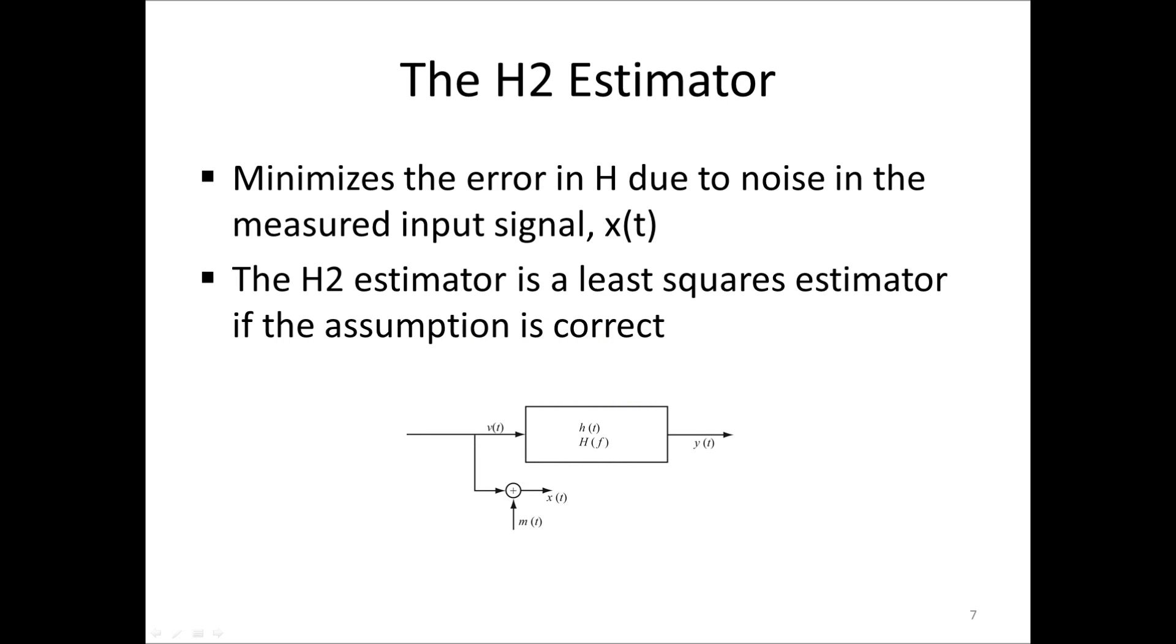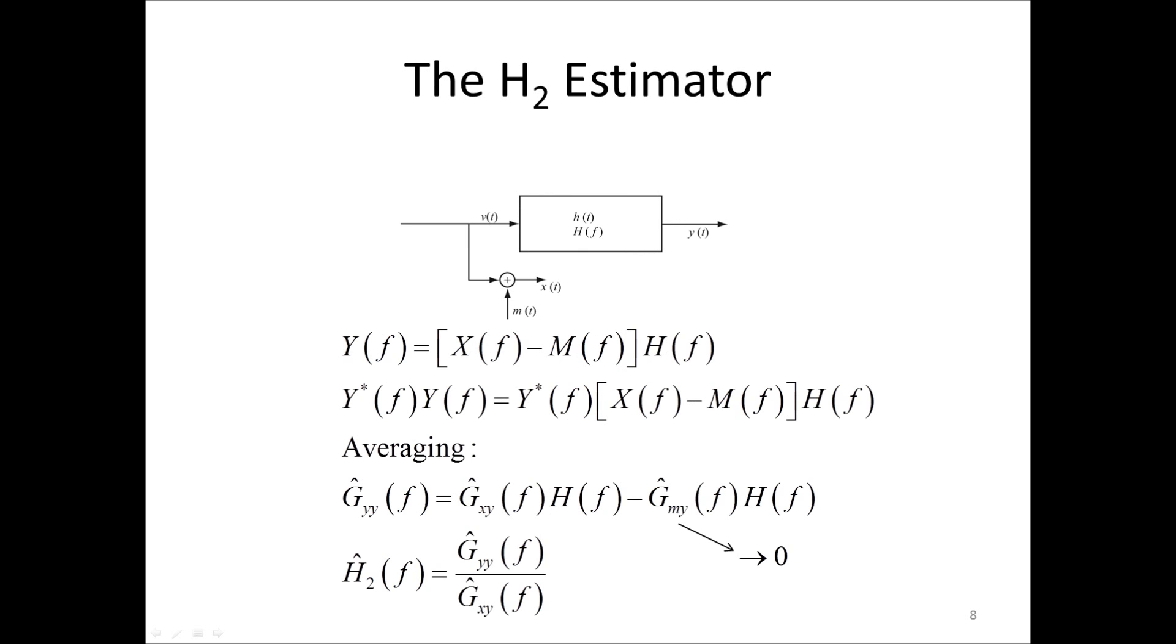Now, in some cases, it's more realistic to assume that it's the output signal that we can measure without any contaminating noise, and that the input is contaminated. We then obtain the H2 estimator, which is also a least squares estimator if this assumption is correct. The equations are somewhat different, but the principle is similar. Here, we multiply the original equation by Y complex conjugate and end up with the estimator H hat 2 equal to GYY divided by GXY.